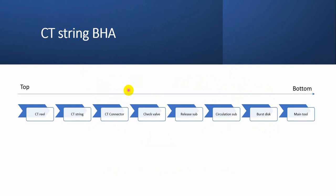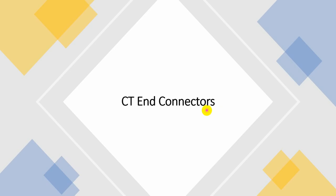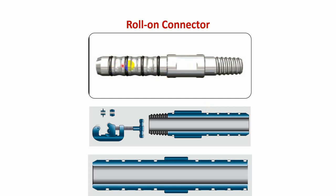Finally, we talk about the coiltube string and BHA. The coiltube goes from the reel, through the coiltube string and injector head gooseneck, into the well. At the end of the coiltube — which is slick pipe with no connections — you must have a connection between it and the BHA (bottom hole assembly). The typical BHA configuration is: coiltube connector, check valve, release sub, circulation sub, main tool, and this configuration may be adjusted.